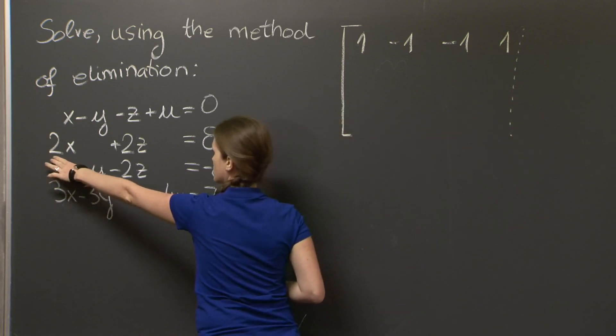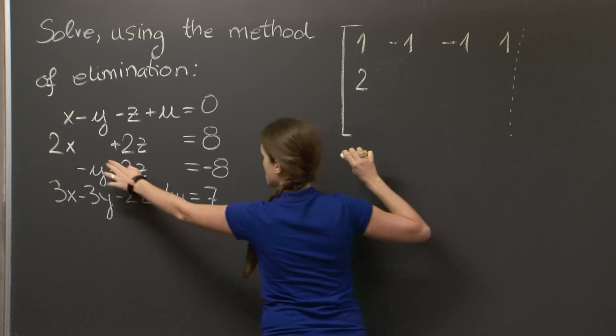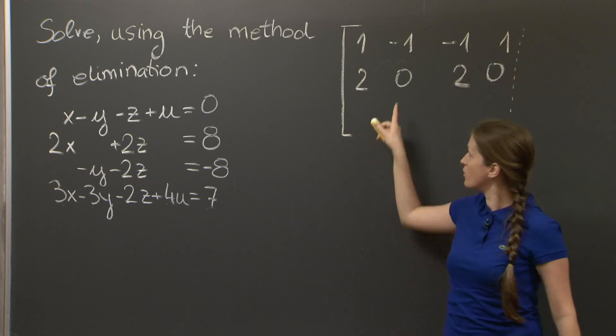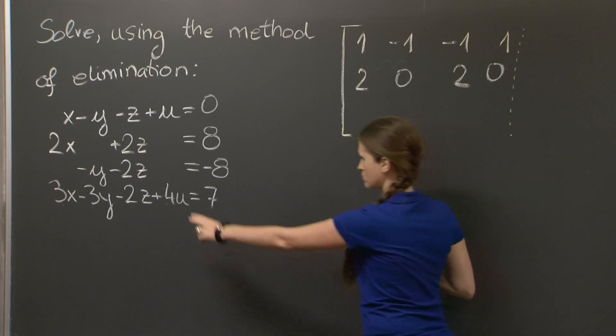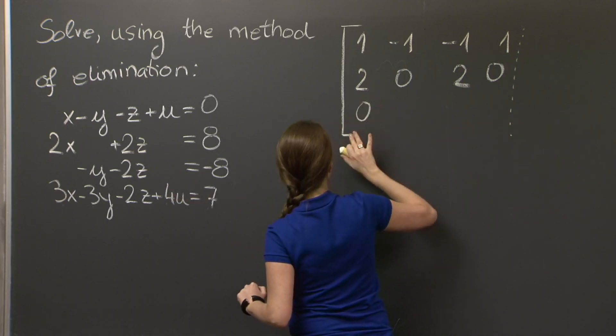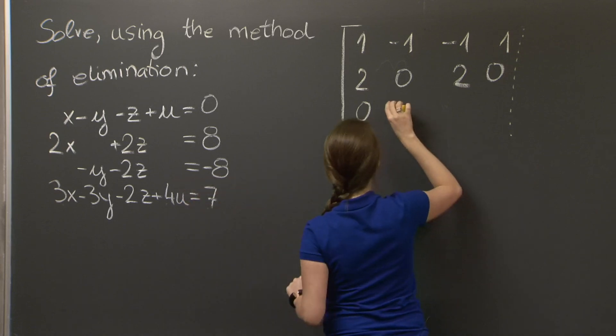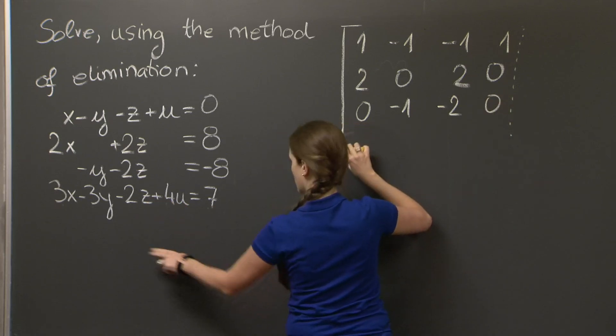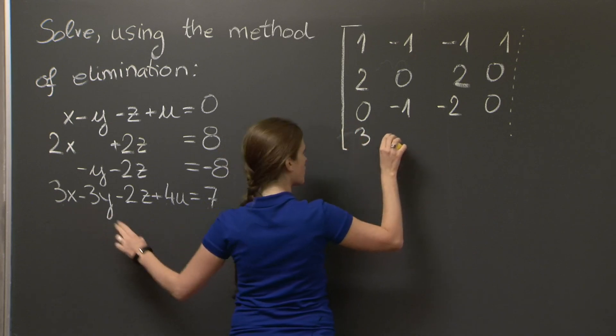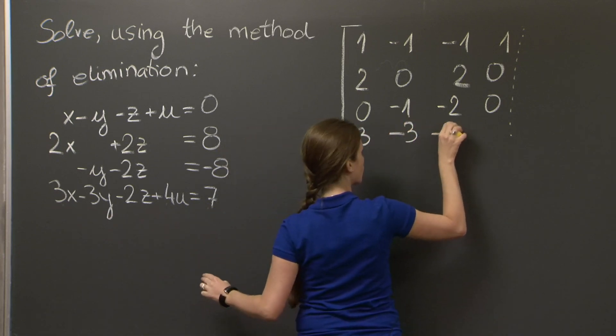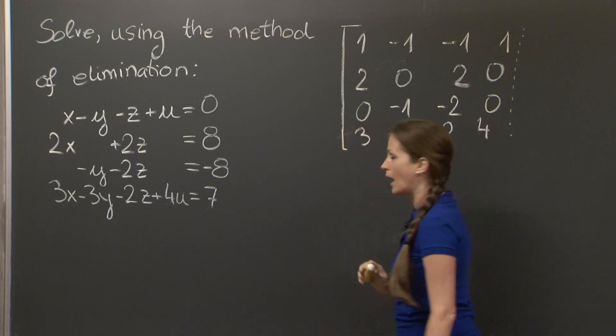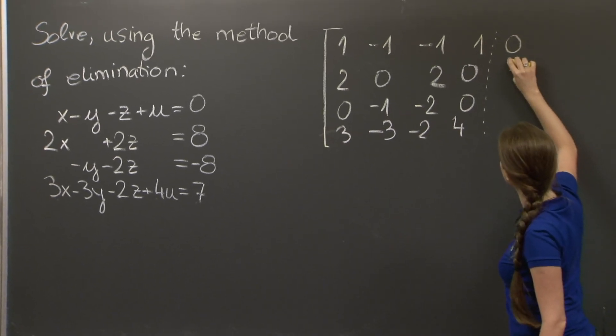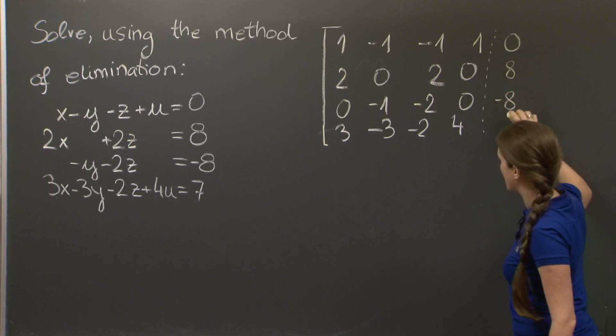The second row, corresponding to the second equation, is 2, 0, 2, 0. And you want to be very careful to put zeros in the right spots here. The third equation is 0, minus 1, minus 2, 0. And the fourth row, corresponding to the fourth equation, is 3, minus 3, minus 2, 4. And as we care about the right-hand side as well, we're going to copy this information and get the augmented matrix of the system: 0, 8, minus 8, 7.